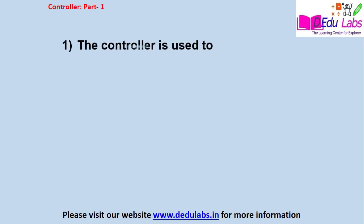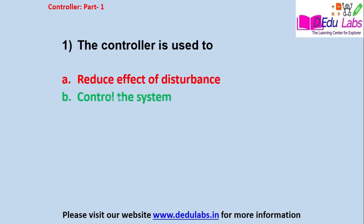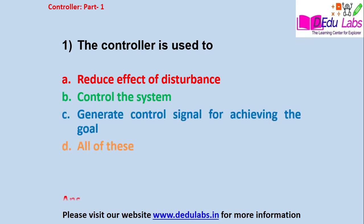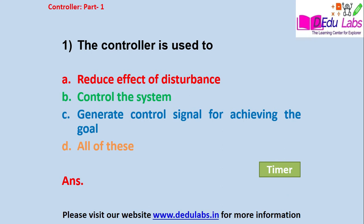Question number one: the controller is used to — Option A: reduce the effect of disturbance; Option B: control the system; Option C: generate the control signal for achieving the desired goal; Option D: all of these. The answer is Option D, all of these. The controller is a device — it may be analog or digital — it receives the error signal, and based on that error signal it generates the control action. The control command is given to the final control elements of the plant, and by help of this control action we achieve our desired goal. If disturbances are present, the effect of the disturbance is reduced or eliminated by the controller.